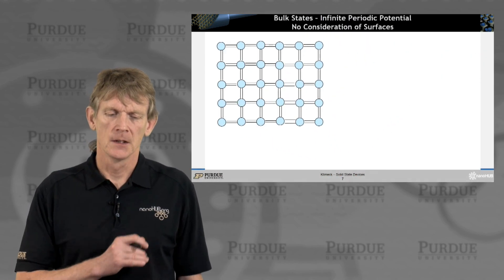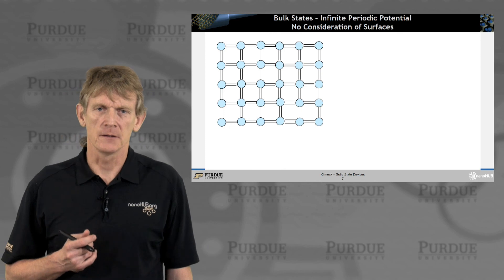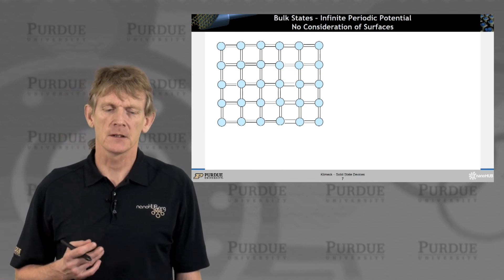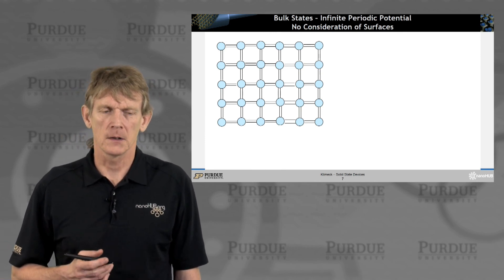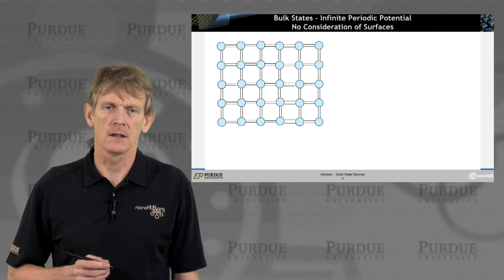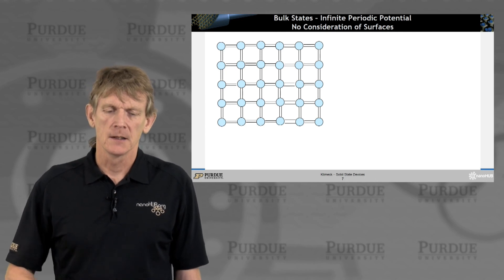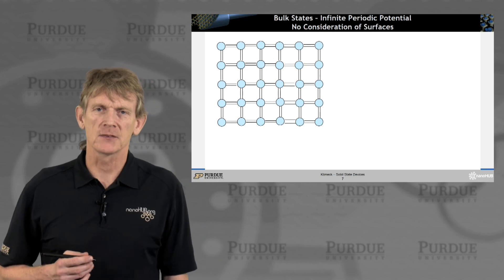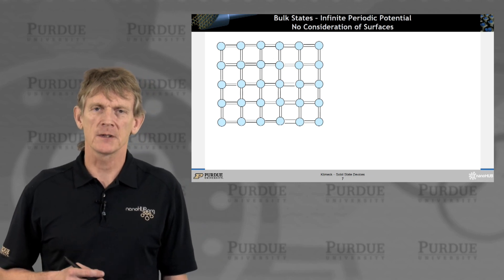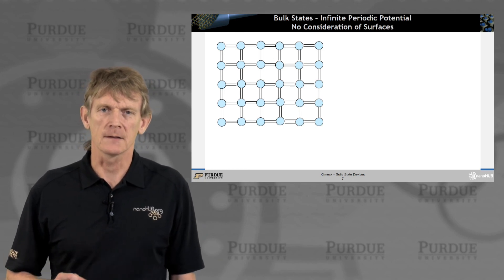Now let's put this back together just for a few minutes and consider this in maybe a more pictorial view. In the past we calculated bulk states, an infinite periodic potential assuming the world had no end.